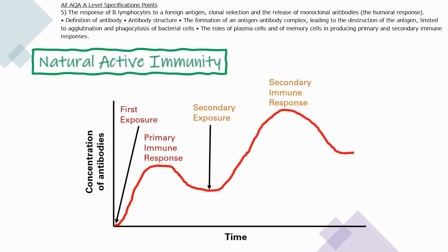Looking at the graph: at the first exposure, the concentration of antibodies is low. As the primary immune response kicks in, the concentration of antibodies increases as lymphocytes produce them. Upon second exposure, the secondary immune response causes the concentration of antibodies to increase rapidly and to a much higher level than in the primary response, because memory cells already remember which antibodies to produce and can generate a high concentration rapidly.